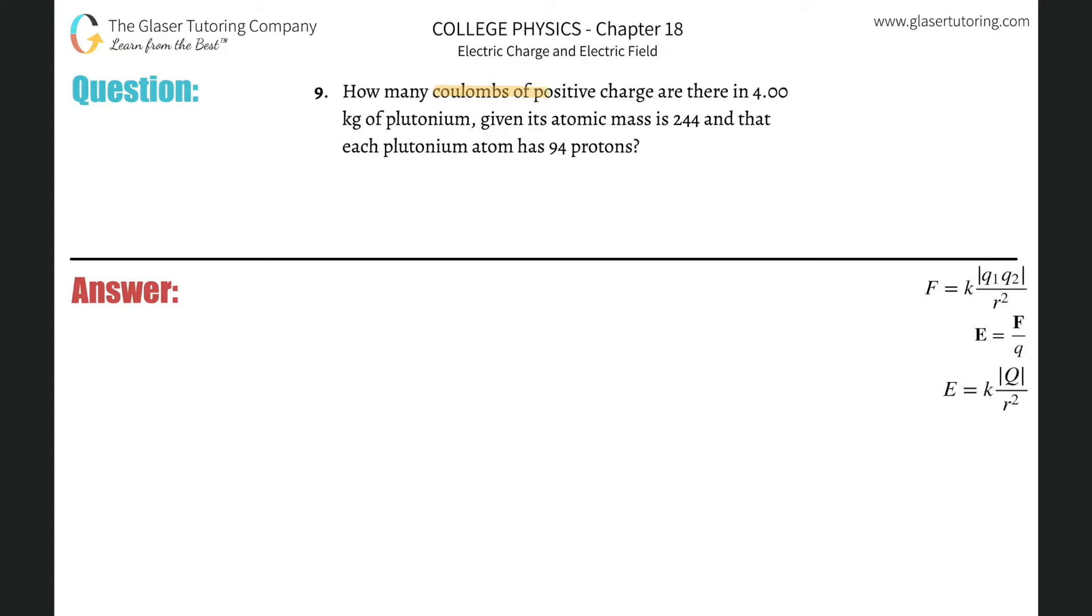Number nine, how many coulombs of positive charge are there in four kilograms of plutonium, given its atomic mass is 244, and that each plutonium atom has 94 protons?